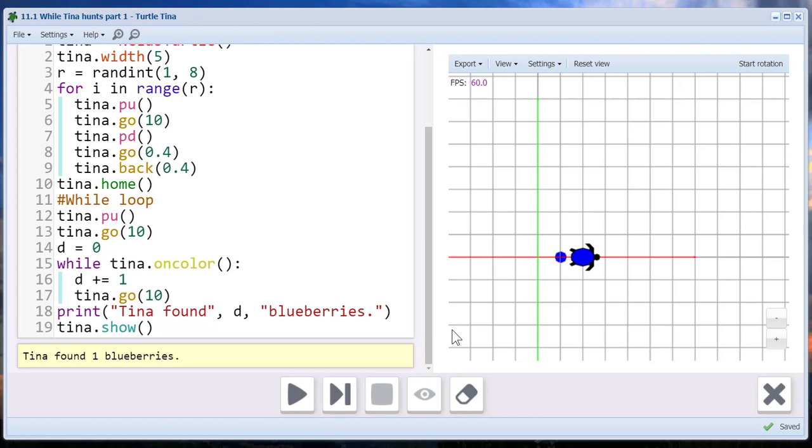To sum up, while loops repeat a set of actions based on a Boolean condition. The body of the loop will be repeated until the Boolean condition evaluates as false. This is known as the stopping condition.